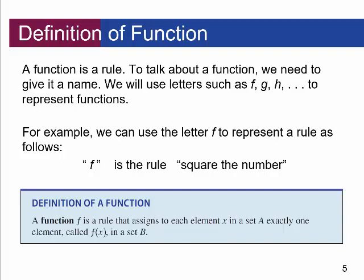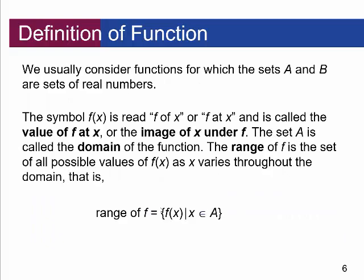For example, we can use the letter F to represent the rule: square the number — take the number and square it. The formal definition: a function F is a rule that assigns each element X in a set A (the inputs) exactly one element called F of X — and that's F of X, not F times X — in set B. Each input value goes to exactly one output value.